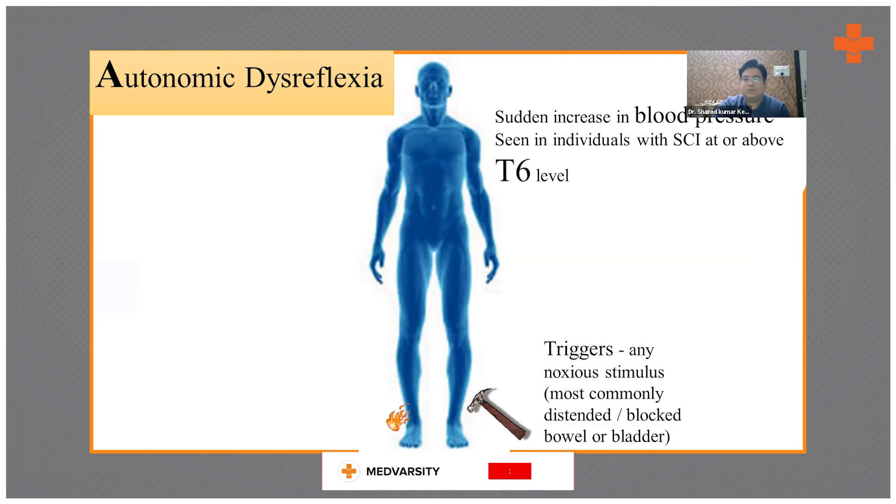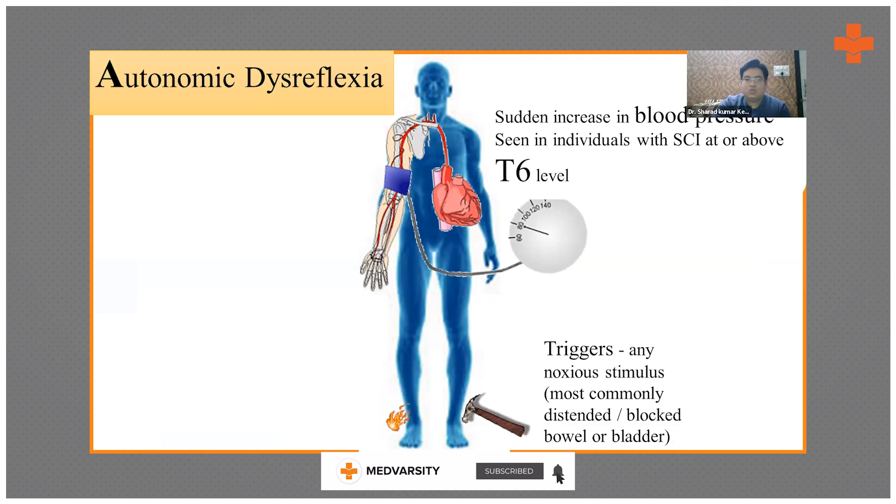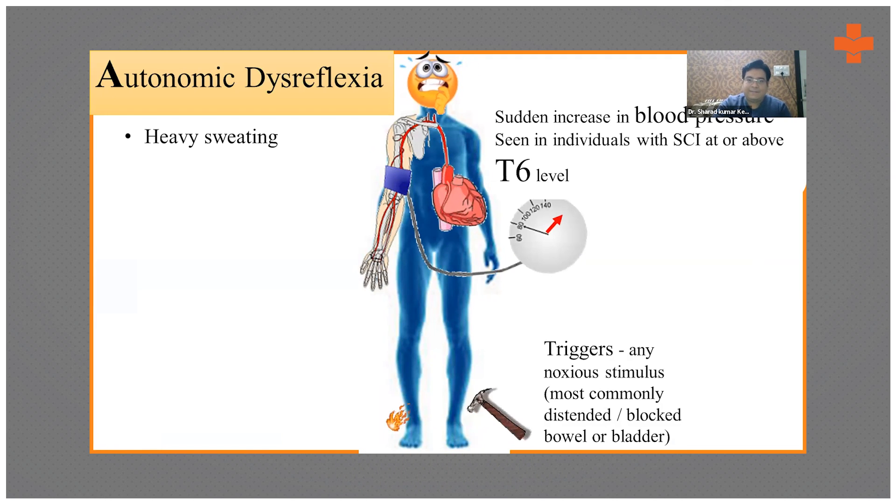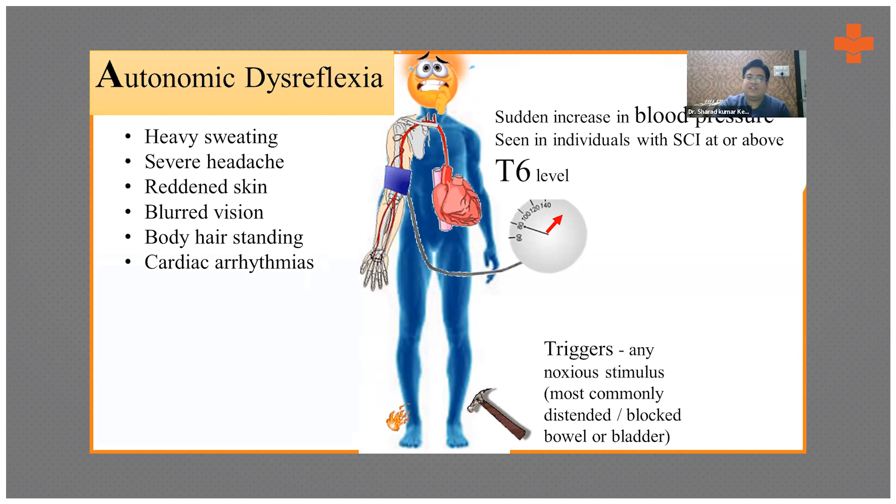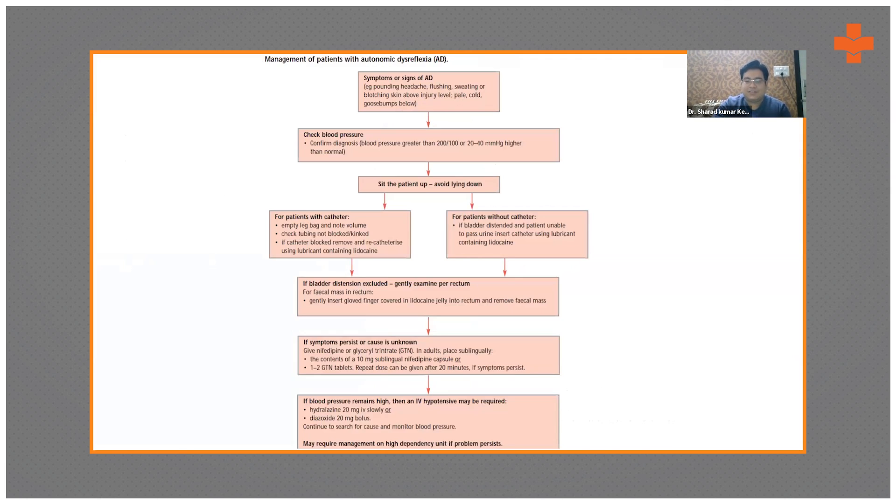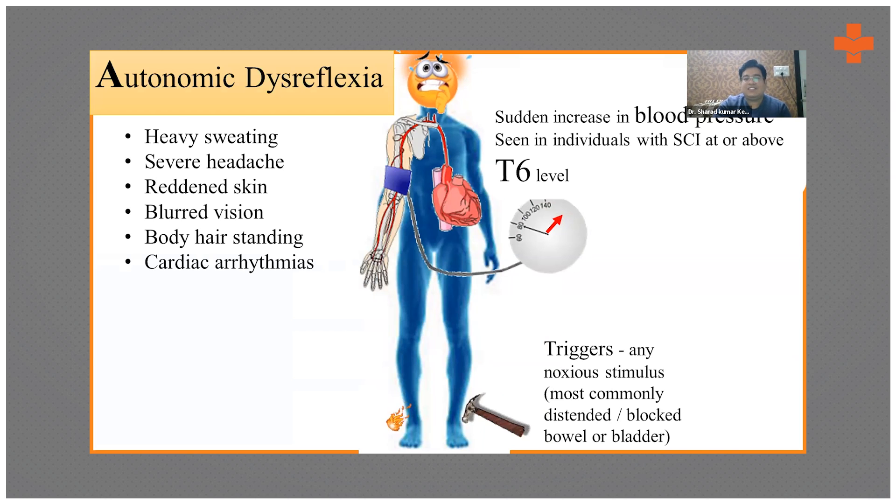So what symptoms do you get? In this diagram we are showing that properly: there is heavy sweating, you can see the heartbeat throbbing, the BP rises, heavy sweating, severe headache, reddened skin, blurred vision, body hair standing, cardiac arrhythmias. So all this can occur.